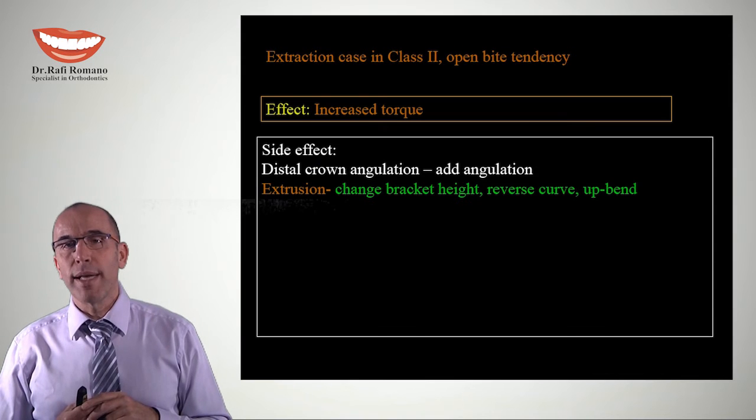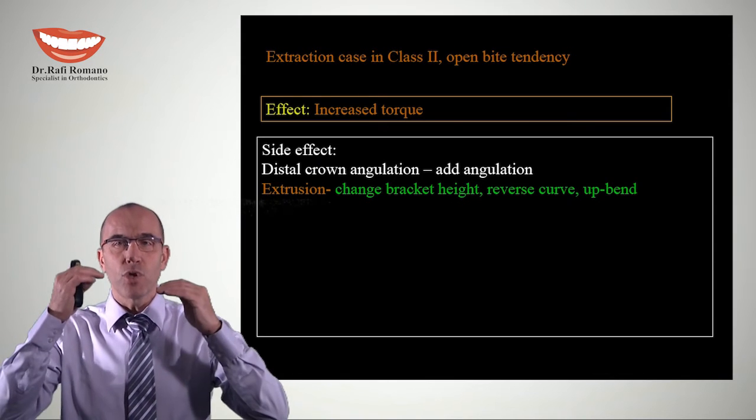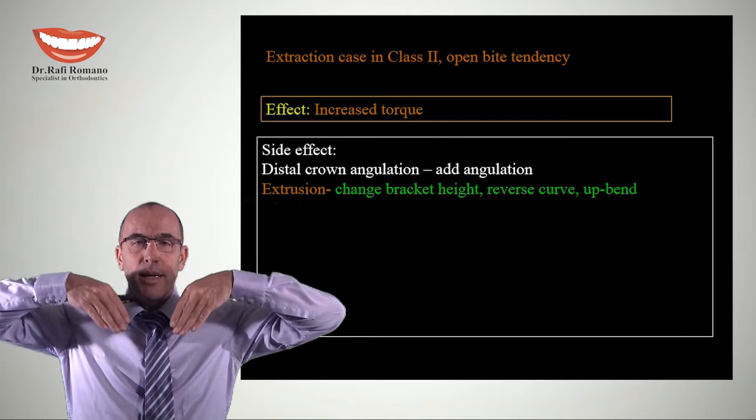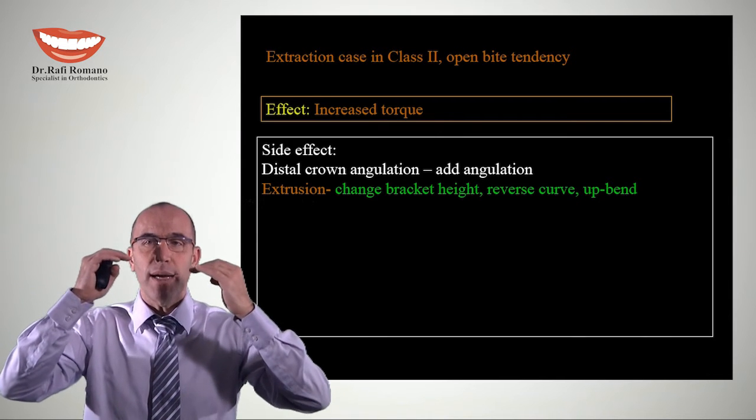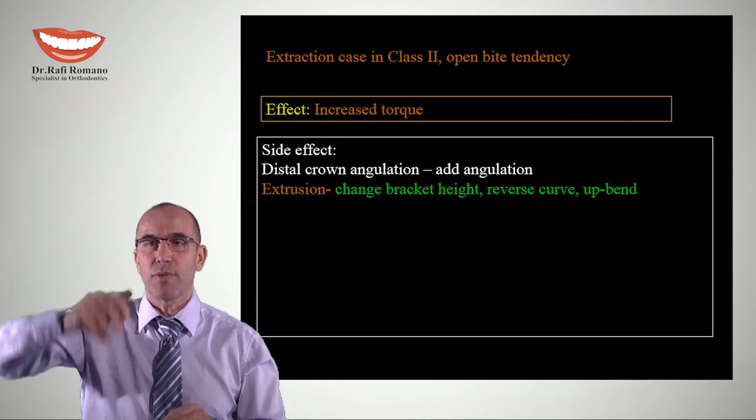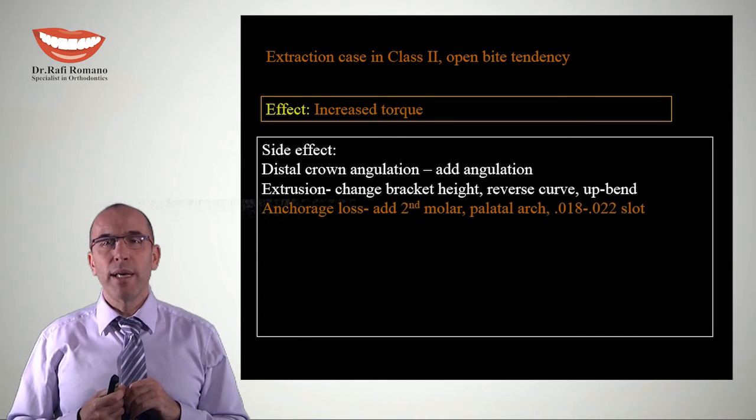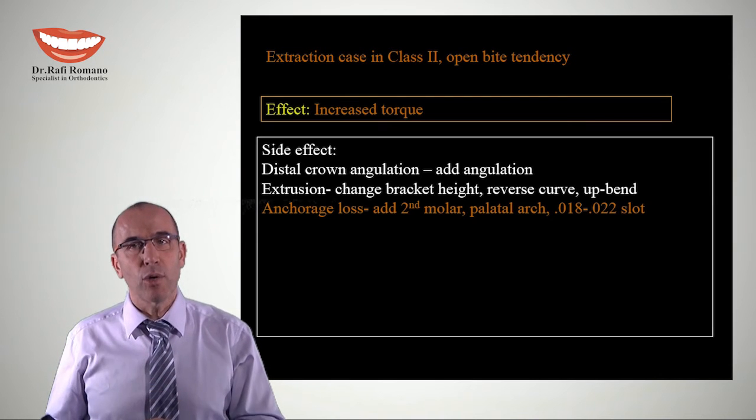When we add torque, we often get intrusion. If we get intrusion while the tooth is proclining, we can change the bracket height or create a reverse curve of Spee. If we have too much torque, we can lose anchorage. To prevent anchorage loss, we can add second molars, palatal arch, mini implants, or headgear.